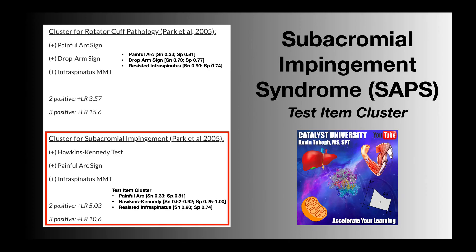In this video, we're going to be discussing the test item cluster for subacromial impingement syndrome, or SAPS. This cluster was evaluated by Park et al. in 2005. If you suspect that your patient has subacromial impingement, you might consider performing these three tests: the Hawkins-Kennedy test, the painful arc sign, and the infraspinatus manual muscle test, also called the resisted infraspinatus test.